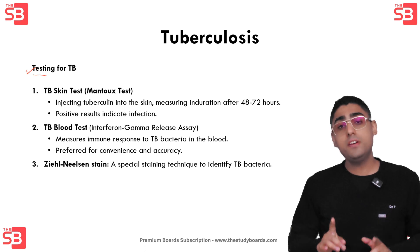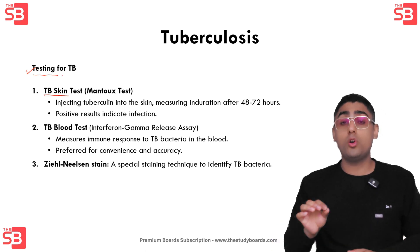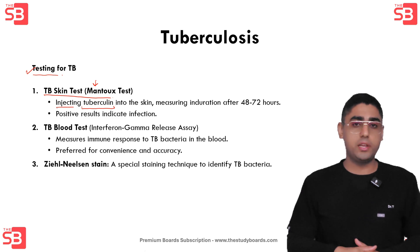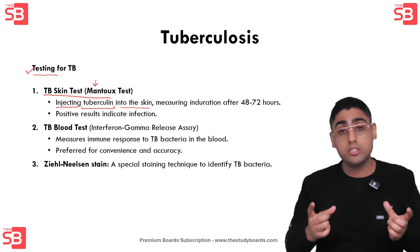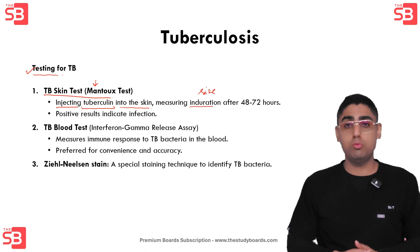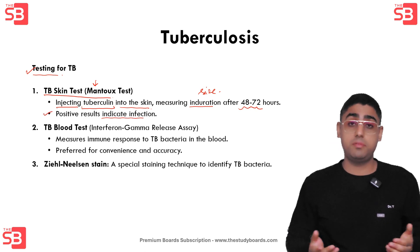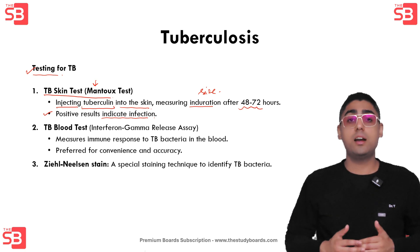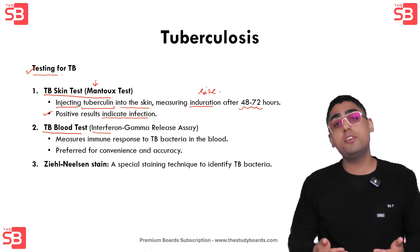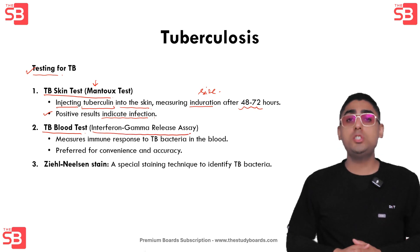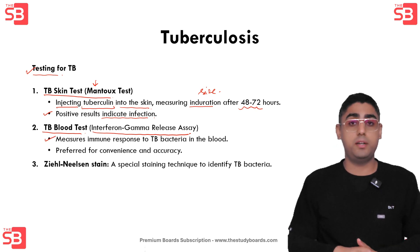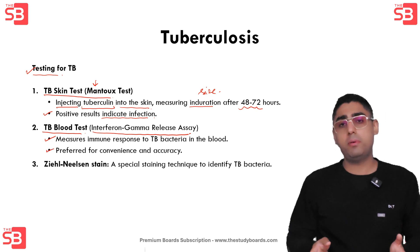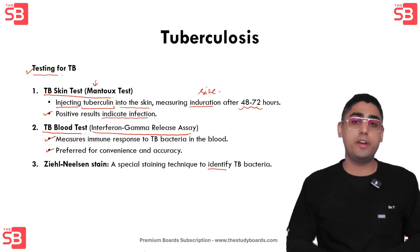For testing tuberculosis, the first test is the TB skin test, also called the tuberculin test or Mantoux test. This involves injecting a small amount of tuberculin into the skin and measuring the induration — the swelling size — after 48 to 72 hours. Positive results indicate TB infection; negative results mean no infection. The second test is the TB blood test, also called the interferon gamma release assay, which measures the immune response to TB bacteria in the blood and is preferred for its convenience and accuracy. The third is the Ziehl-Neelsen stain, a special staining technique to identify TB bacteria.